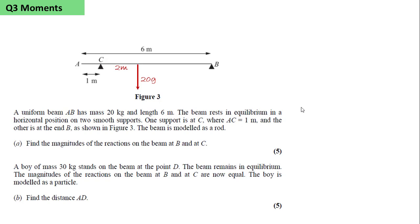The beam is modelled as a rod. We have the reaction at C and the reaction at B. Find the magnitudes of the reactions on the beam at B and C.